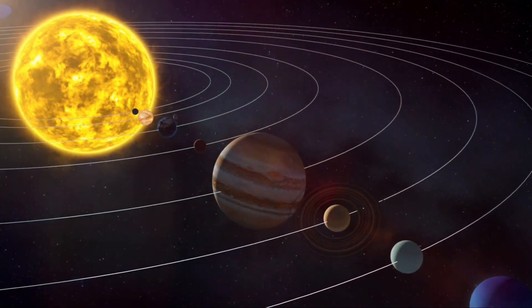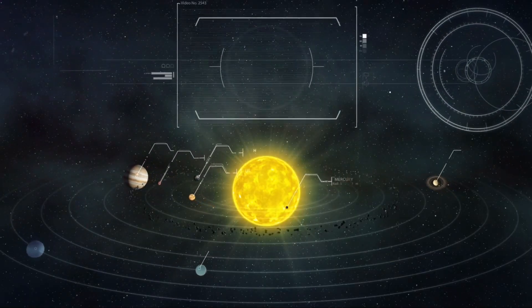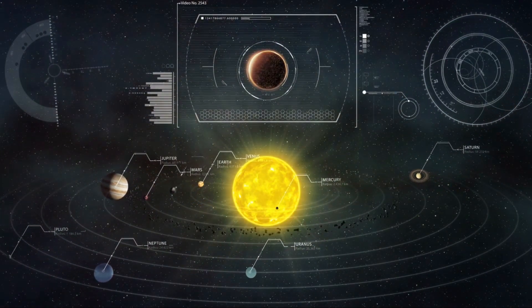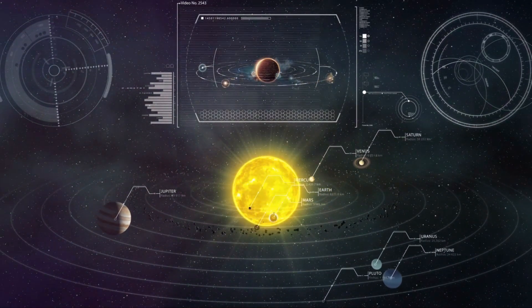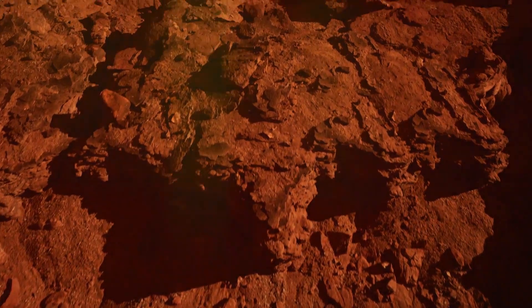That's right, Earth's evolutionary path stretched out across the vast expanse of our solar system. It's as if our neighborhood of planets is a cosmic time capsule, each one holding a different chapter of Earth's story. Take Mars, for example.